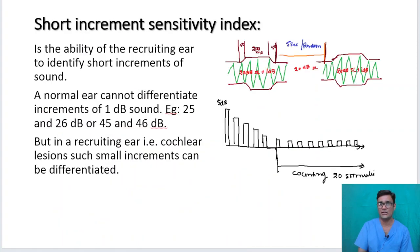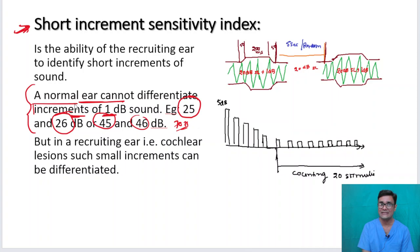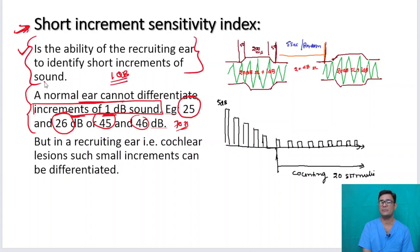Now, coming to SISI — Short Increment Sensitivity Index. What is this test based on? A normal ear cannot differentiate increments of one decibel. That is, if you give 25 or 26 decibels, a normal ear cannot pick it up — whether it is 45 and 46, or 70 and 71, you cannot detect that one decibel increment. But a recruiting ear can pick up even that one decibel increment. This is the basis of the Short Increment Sensitivity Index.